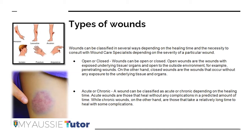First, a wound can be open or closed. An open wound is one which exposes underlying tissue or organs to the outside environment. Examples include penetrating wounds, abrasions, lacerations, avulsions — where a part of the skin breaks away and is exposed to the external environment — as well as incisions and puncture wounds. All of these expose internal tissue or underlying organs to the outer environment.